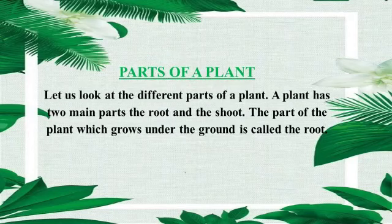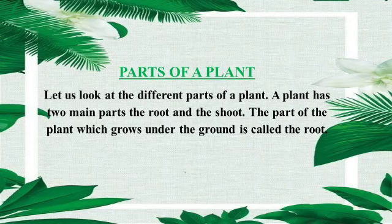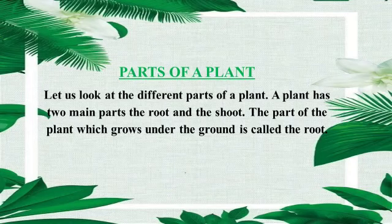Now students, come to page number 40. Let us look at the different parts of a plant. A plant has two main parts: the root and the shoot. The part of the plant which grows under the ground is called the root. آئیے ایک پلانٹ کے مختلف حصوں کو دیکھیں۔ ایک پلانٹ کے دو اہم حصے ہوتے ہیں: جڑ اور شوٹ۔ پلانٹ کا حصہ جو زمین کے نیچے اگتا ہے، root کہلاتا ہے۔